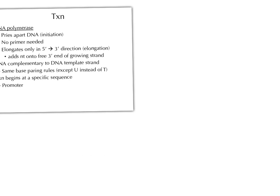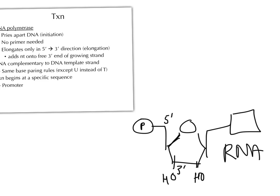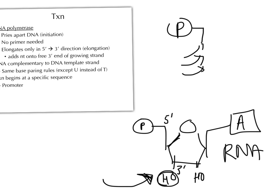The three prime and five prime just indicate what part of the sugar we're talking about. The three prime end has a hydroxyl group on it, and the five prime end has the phosphate group. This is ribose, so it'll have another hydroxyl group because it's RNA, and the bases are A, U, C, G in this case. New nucleotides can only be added onto the three prime end — onto that hydroxyl group — so it has to build from the phosphate-containing five prime end and add on at the three prime to build the RNA strand.